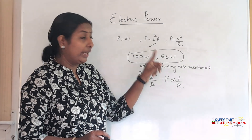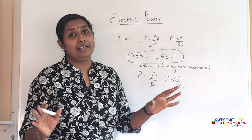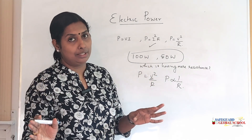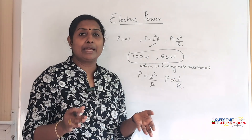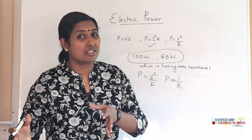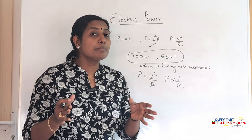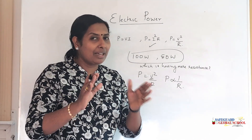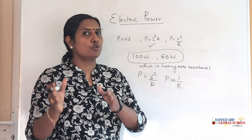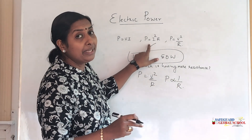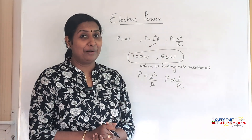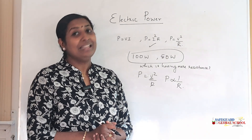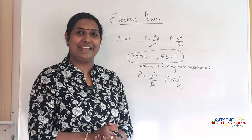Whenever nothing is specified about voltage or current being constant, take voltage as constant. However, in certain questions it will be given that two bulbs are connected in series — series means the same current flows through both, so current is constant. In those cases you must use P = I²R. I hope you have grasped this concept really well. Thank you children, see you in the next class.